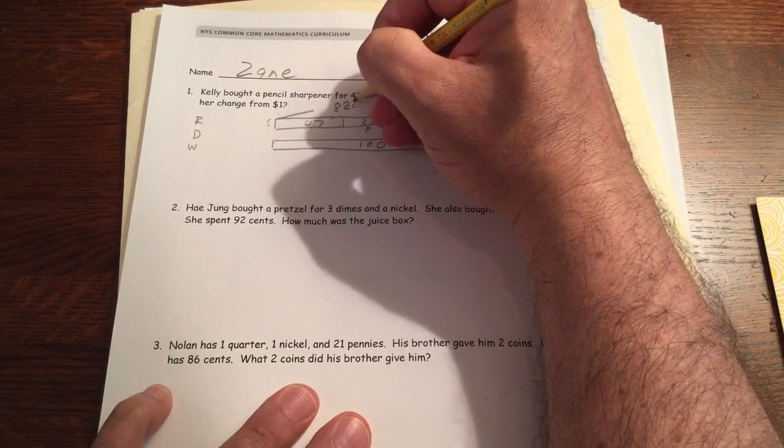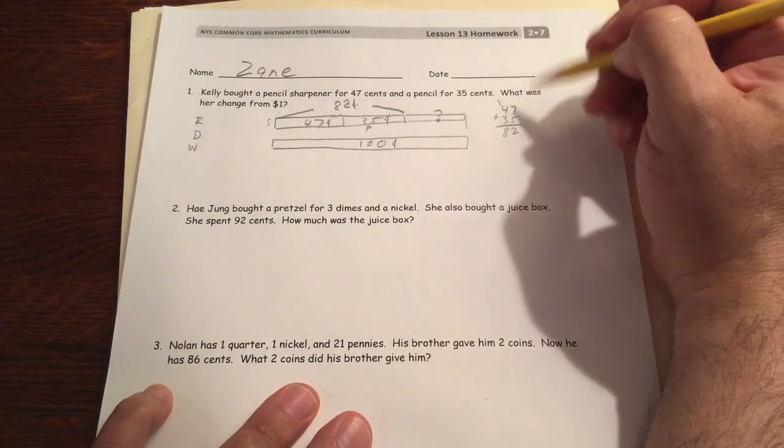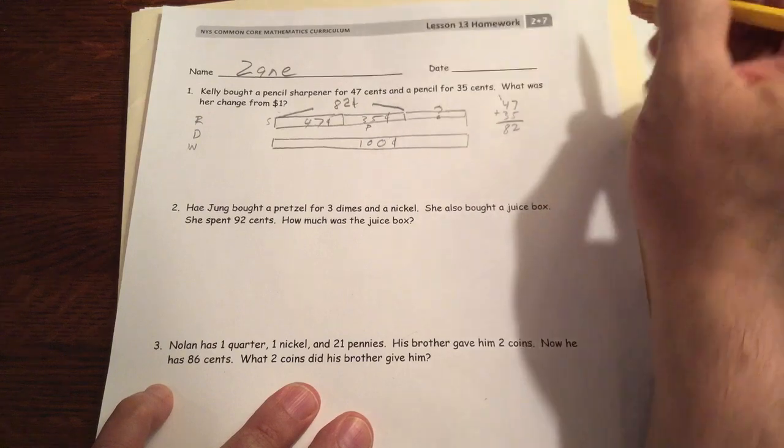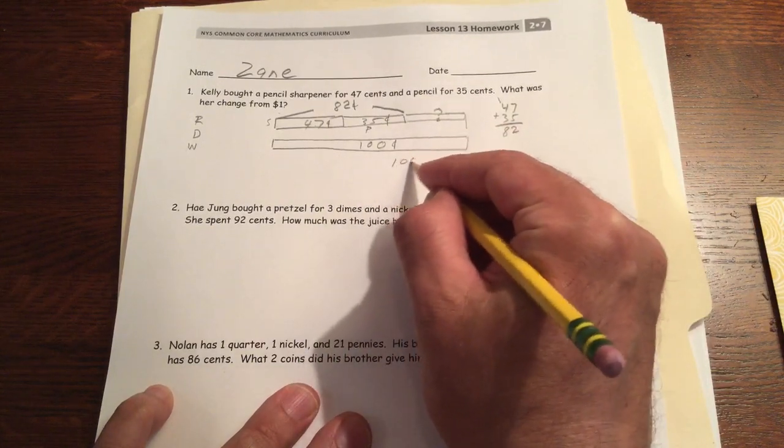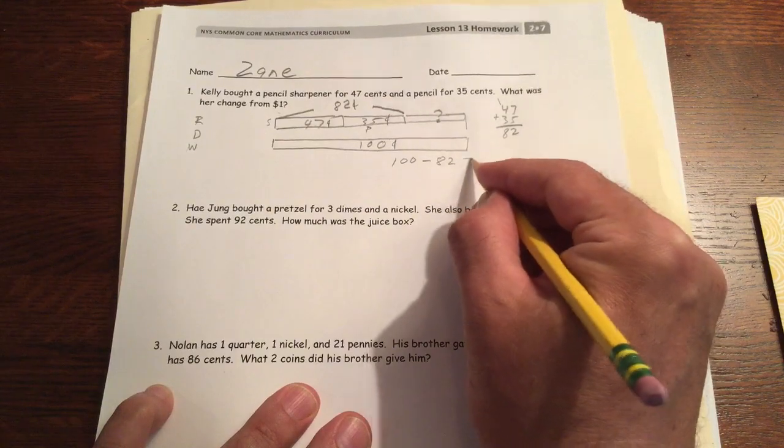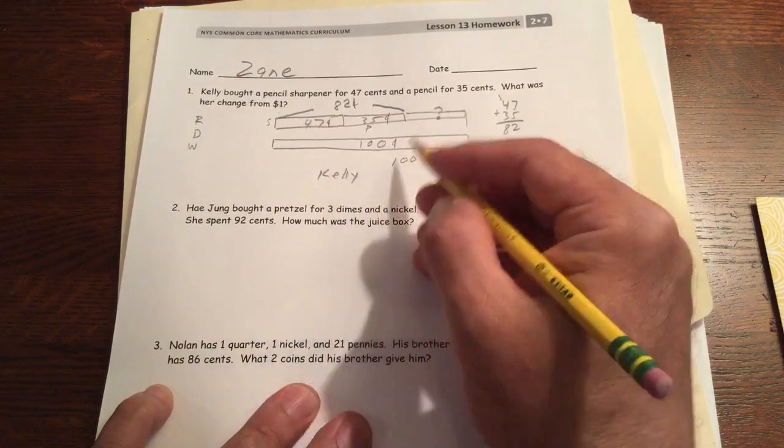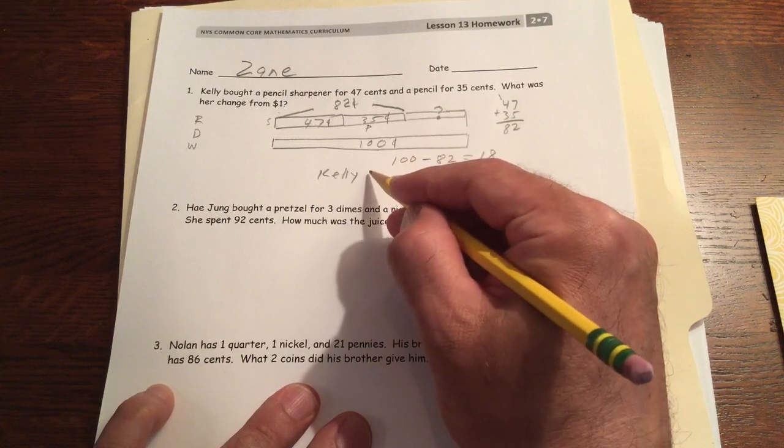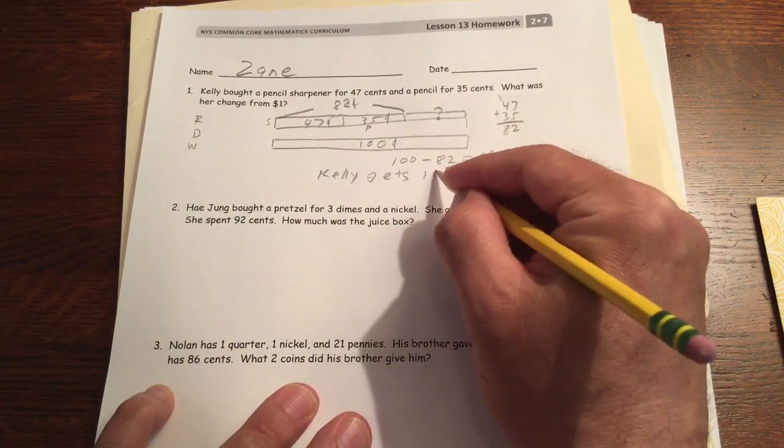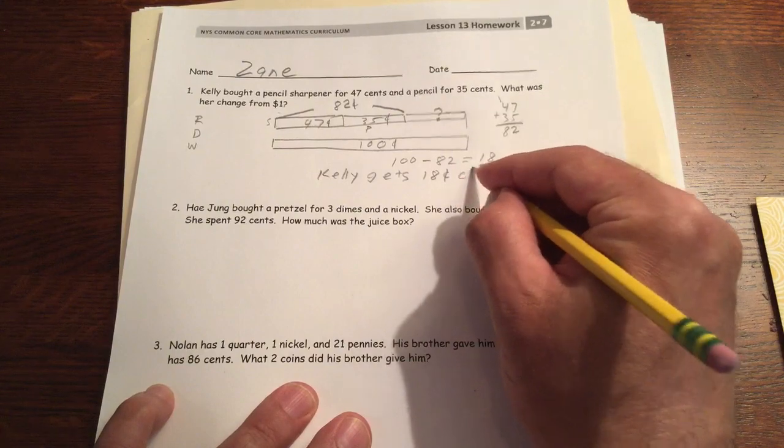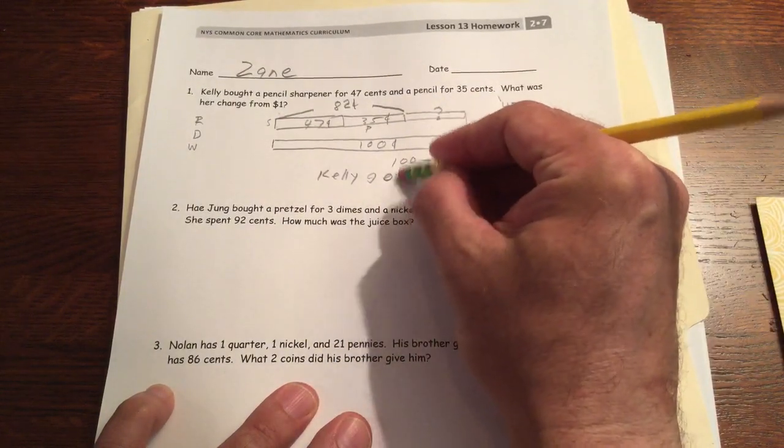82 cents. And so we have 82 cents. If you're good at subtracting from 100 you might be able to do this mentally, but you'd still have to write out the equation. A hundred minus 82, that's going to be 18. So Kelly gets 18 cents change. She got 18 cents change.